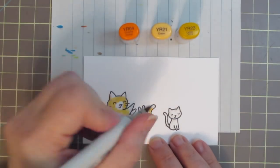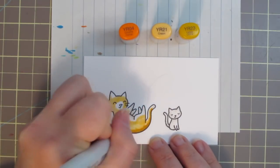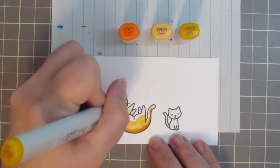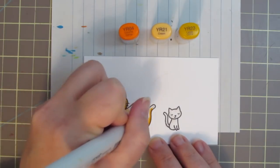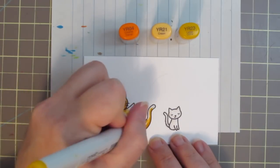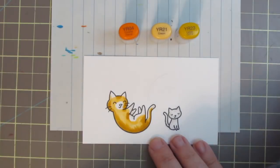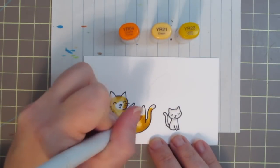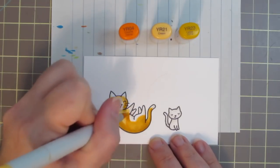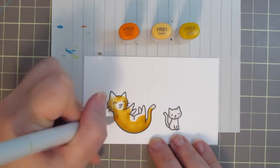Then I can grab my YR23 and start to lay in my shadows. So along his back, since he's laying on it, there's not going to be any sun hitting there. I'm also going to add some around his face to make it look more rounded, and along the backs of his legs. And then I'll just bring that color up a bit, so it'll be easier to blend with my YR21. So again, just taking that and kind of scribbling that on in circular motions, and just making sure that that blends out nicely.